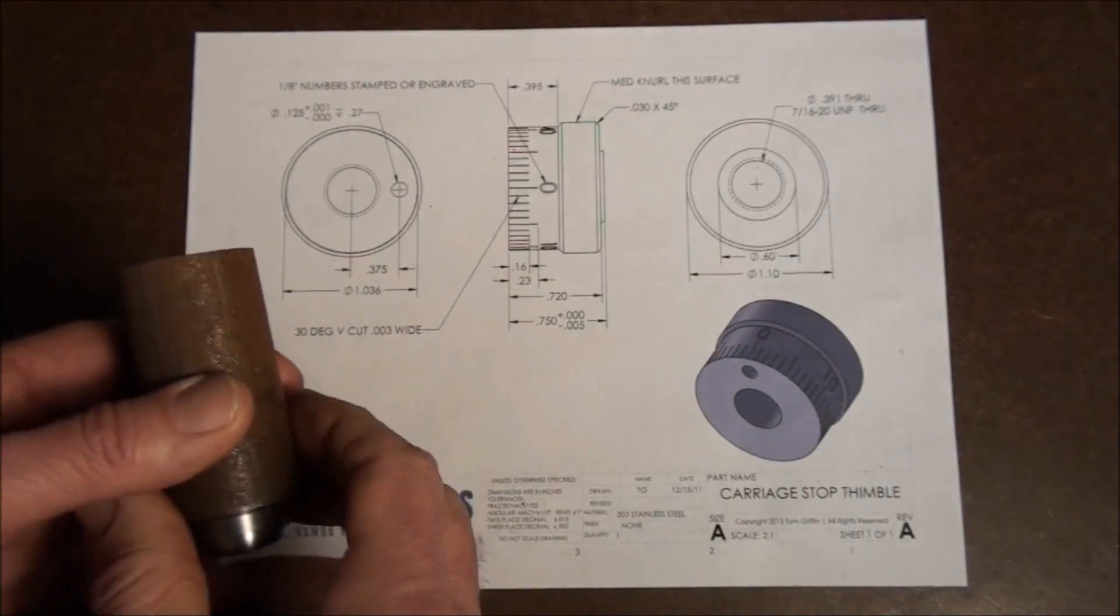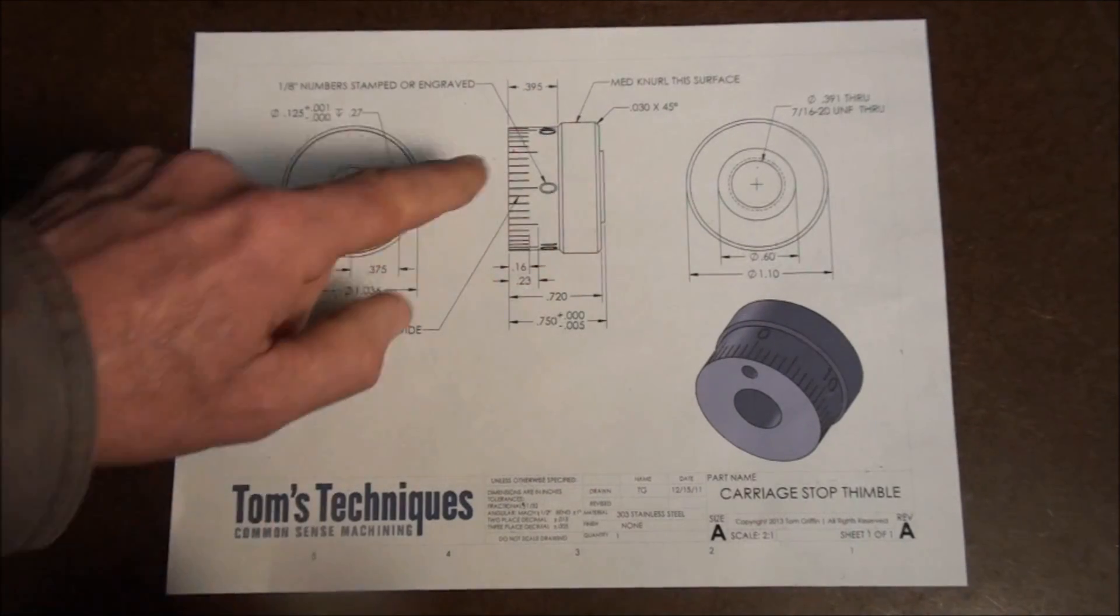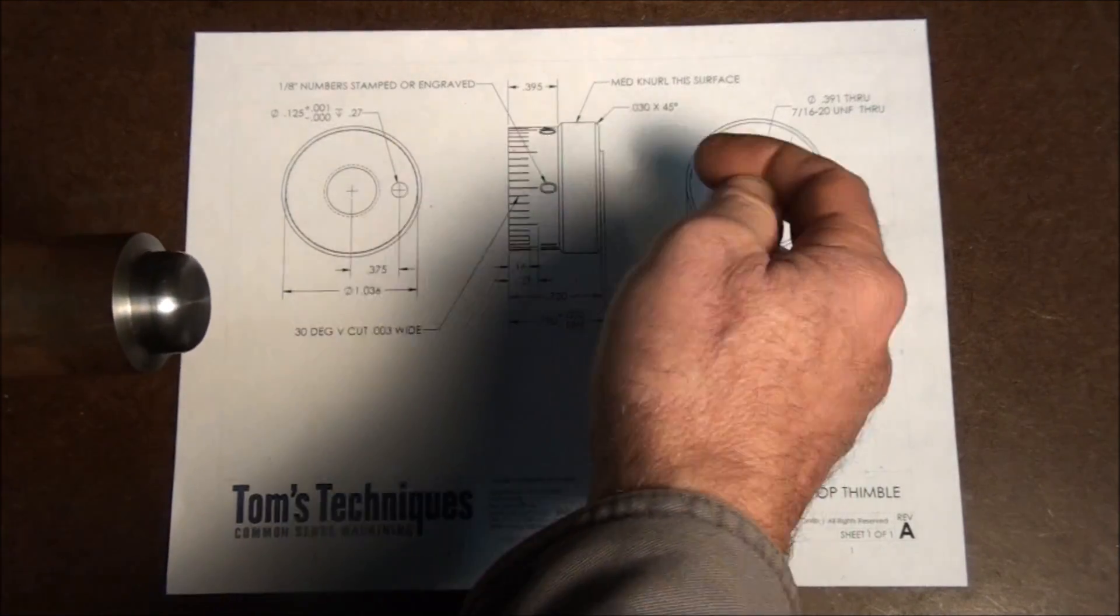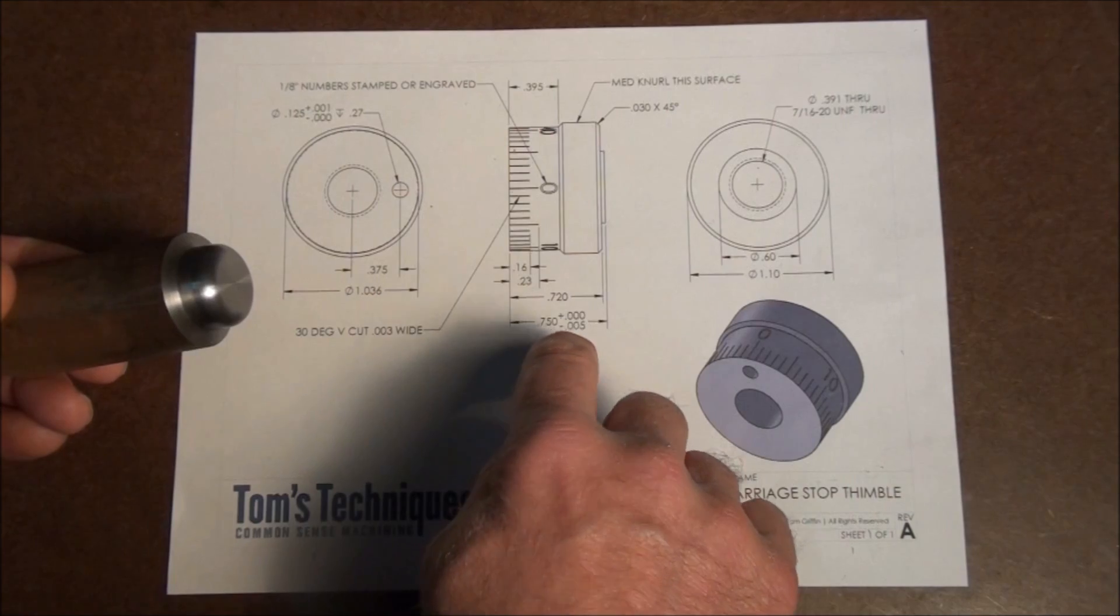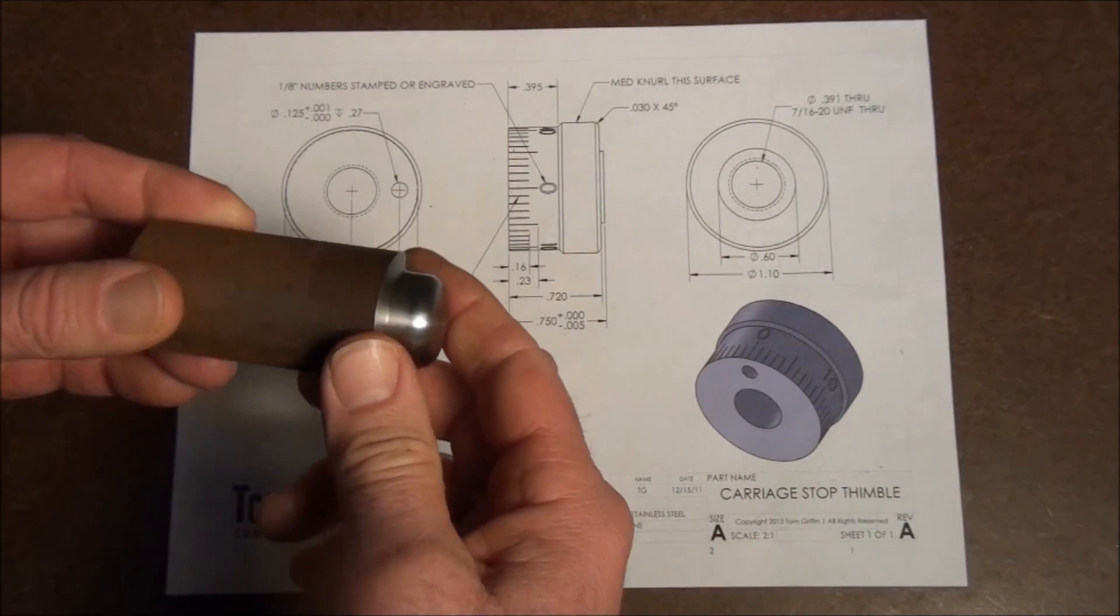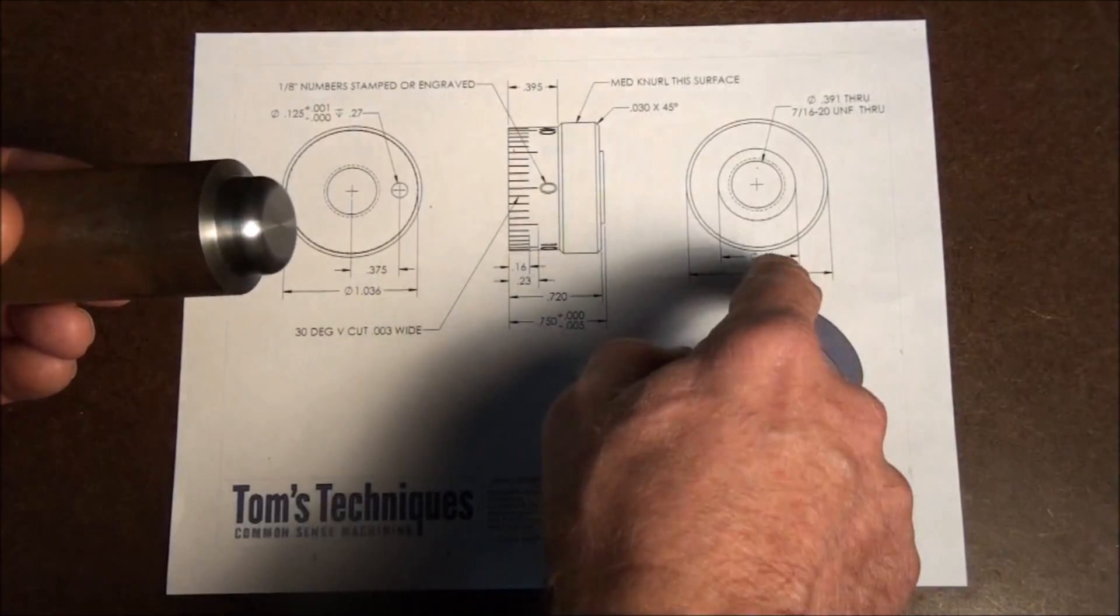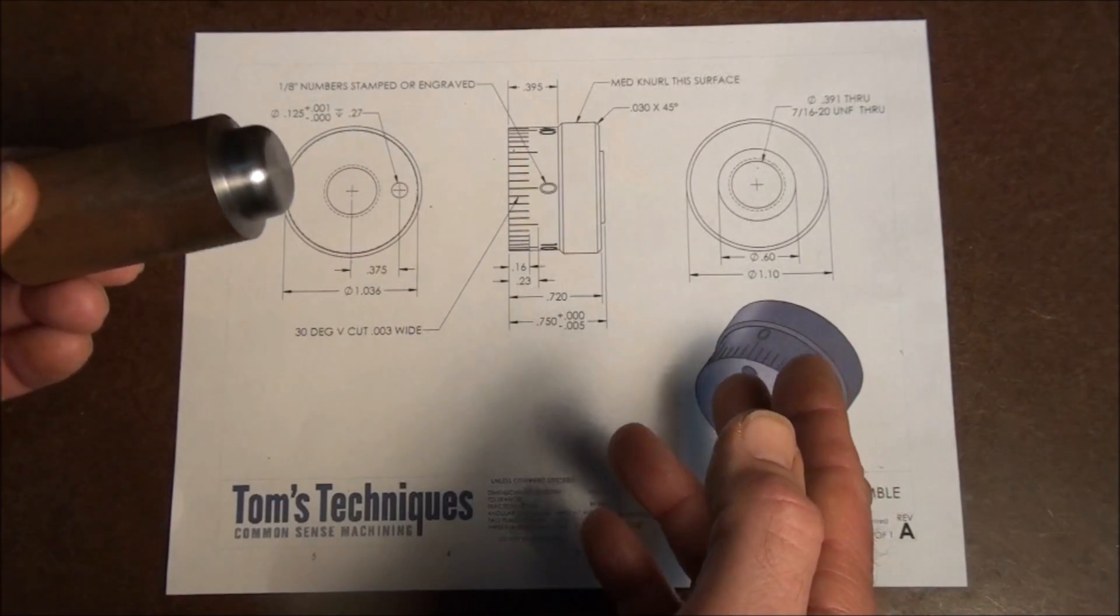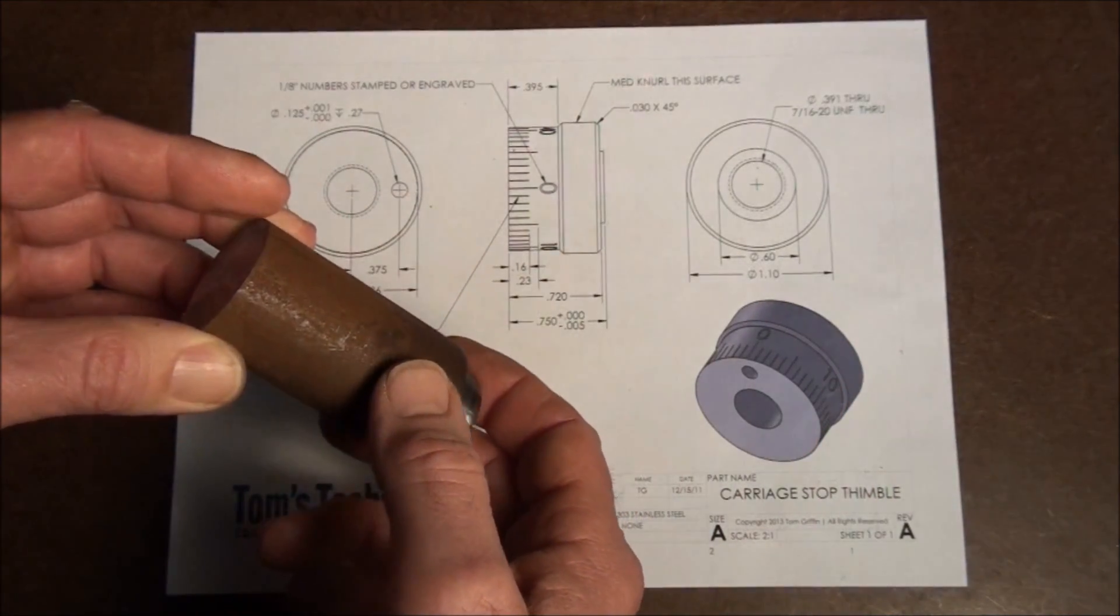After that I think I'll probably chuck up on this part here, this 1.036 diameter. And I'll face the right hand end to length, to this 0.750 plus nothing minus five dimension. And we have to leave this raised portion, this six tenths diameter raised portion here. We have to make sure and leave that behind. And after that, I think what I'll do is I'm not going to put the seven sixteenths twenty thread in right away.